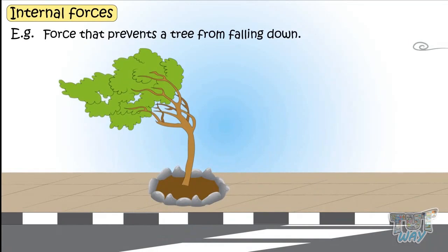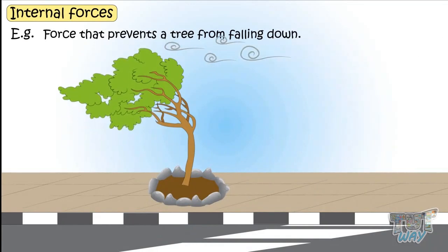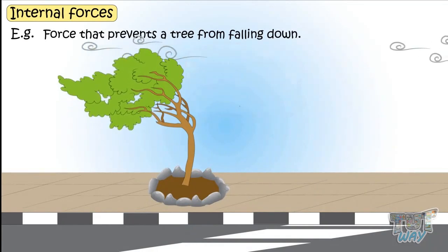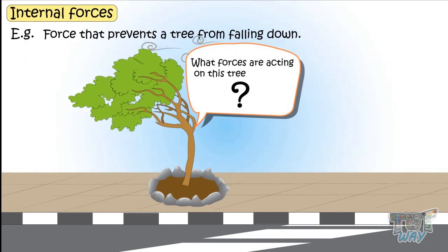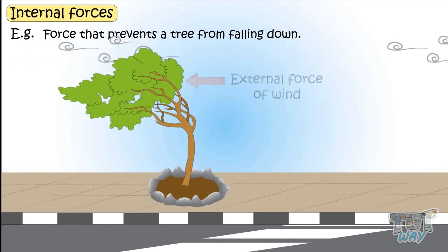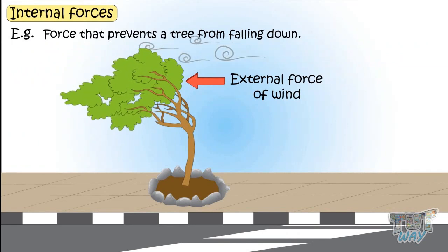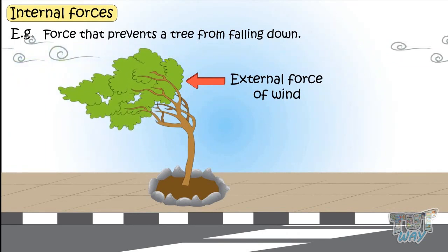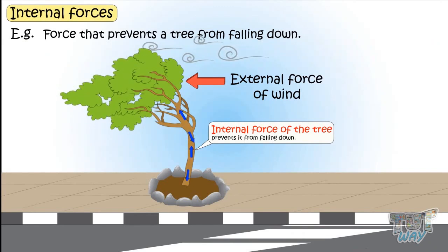Here is a tree which is being blown by wind, but it does not fall down. What forces are acting on it? There is external force of wind which is blowing it, and the internal force from the tree is preventing it from falling down.